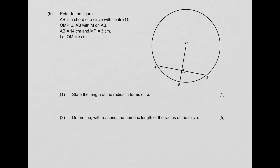Question B. Refer to the figure. AB is a chord of a circle with center O. OMP is perpendicular to AB, they've given us that, and M is a point on AB. AB is equal to 14 centimeters — they haven't given us that on the diagram, so it's a good idea to add that on. They tell us MP is equal to 3 centimeters. Those are the two measurements they give us.